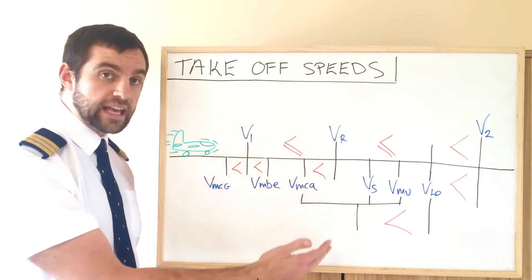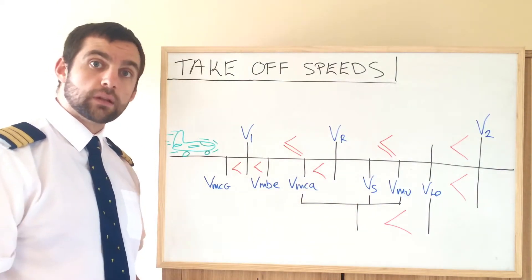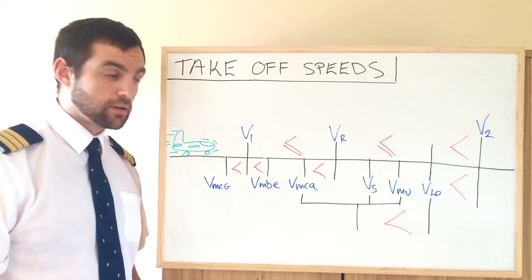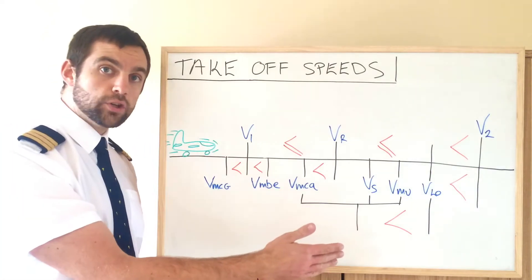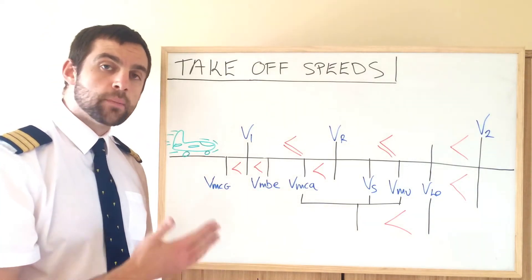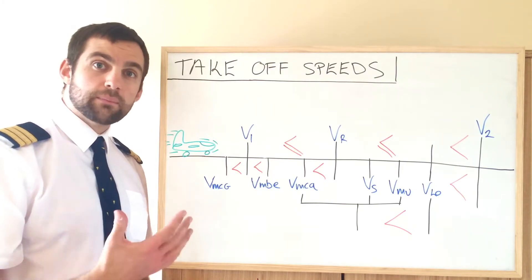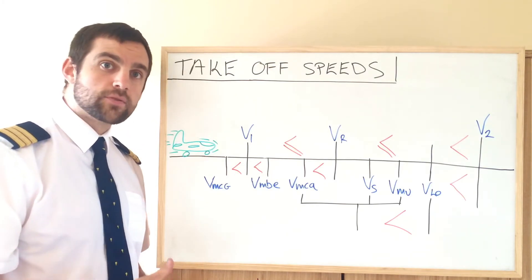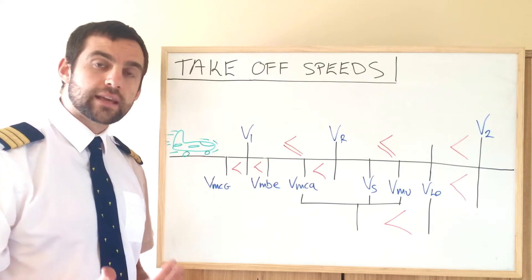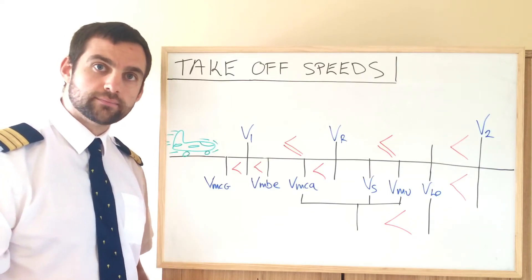Next in line we have VS — the stall speed of the aircraft, where no lift is generated over the wings, or little lift. VMU, the next one, is minimum unstick. It's essentially the speed at which the manufacturer has demonstrated that the aircraft can safely lift off without demonstrating any dangerous characteristics of any sort.